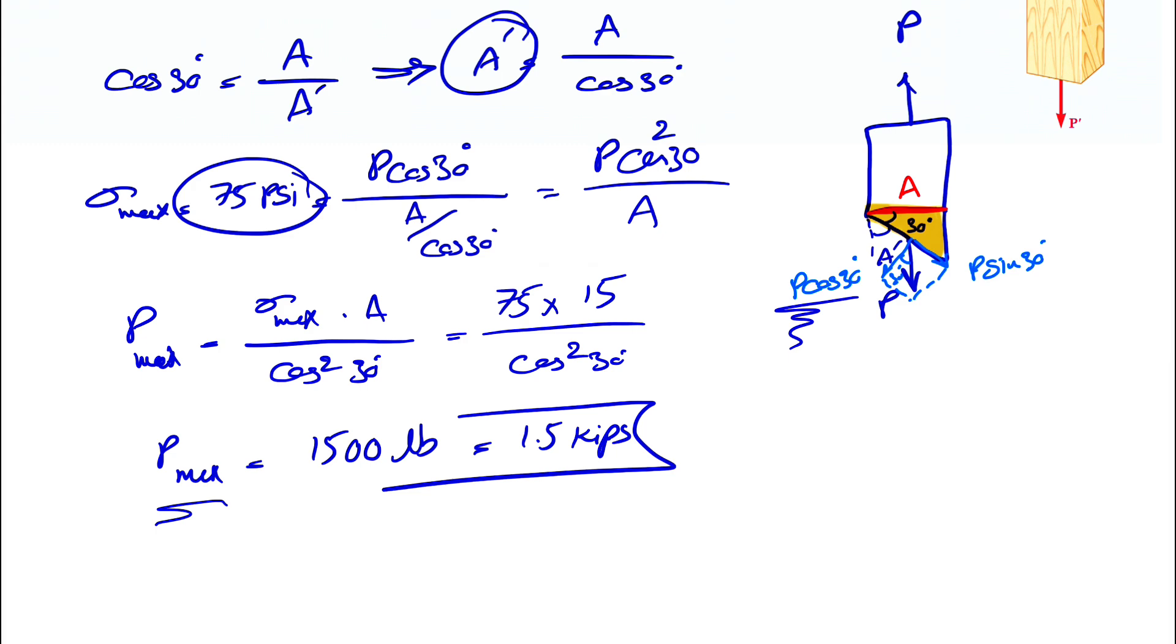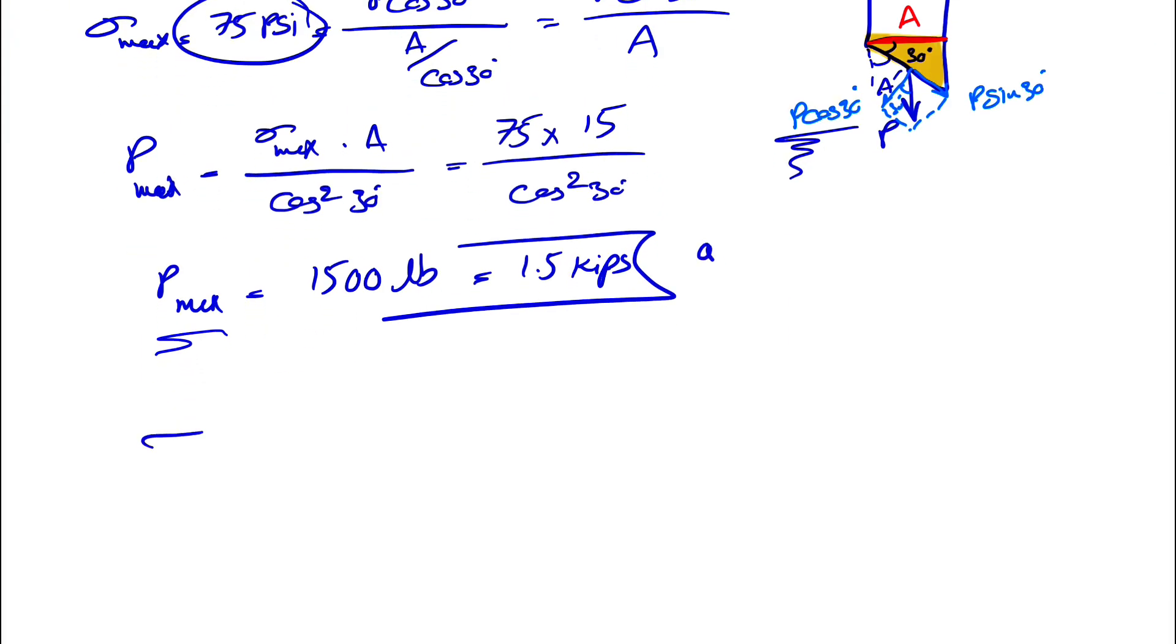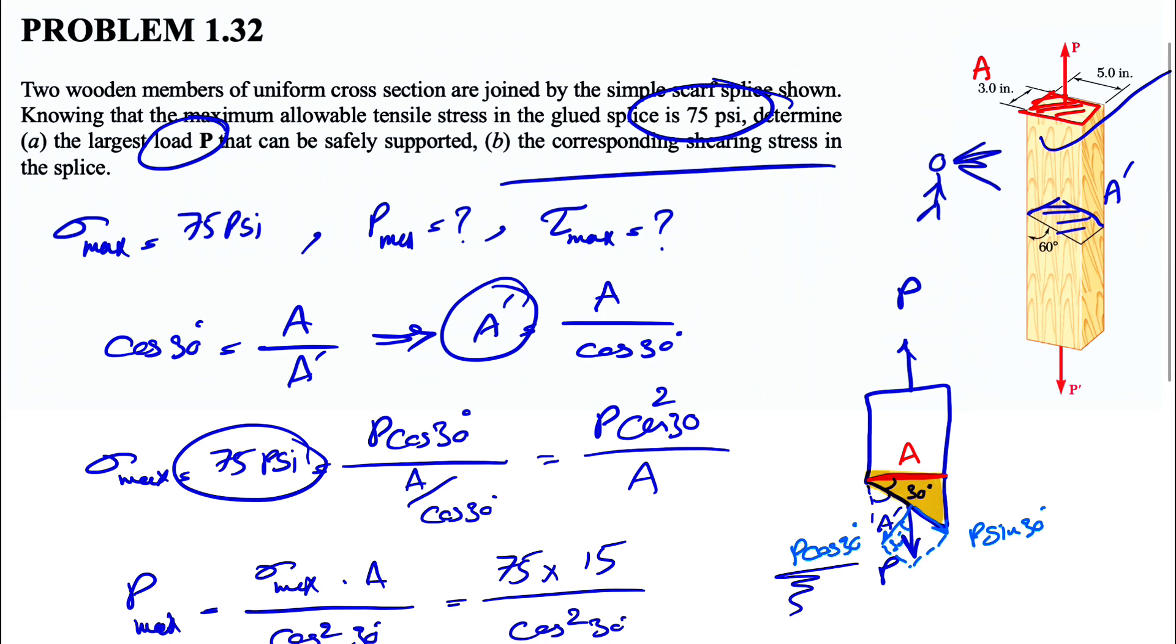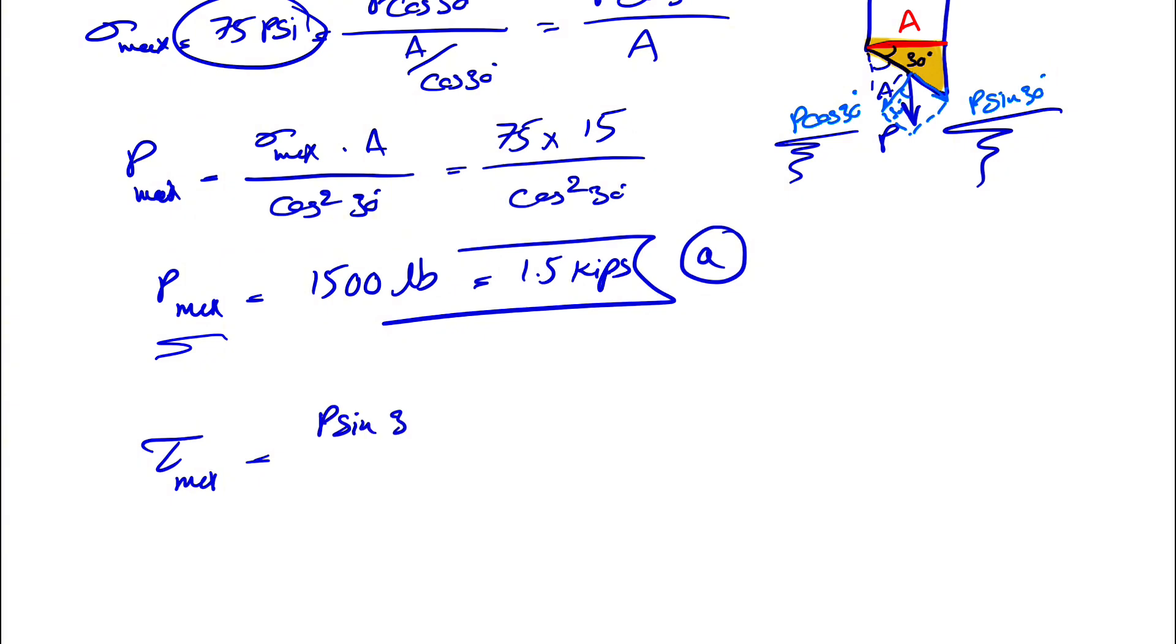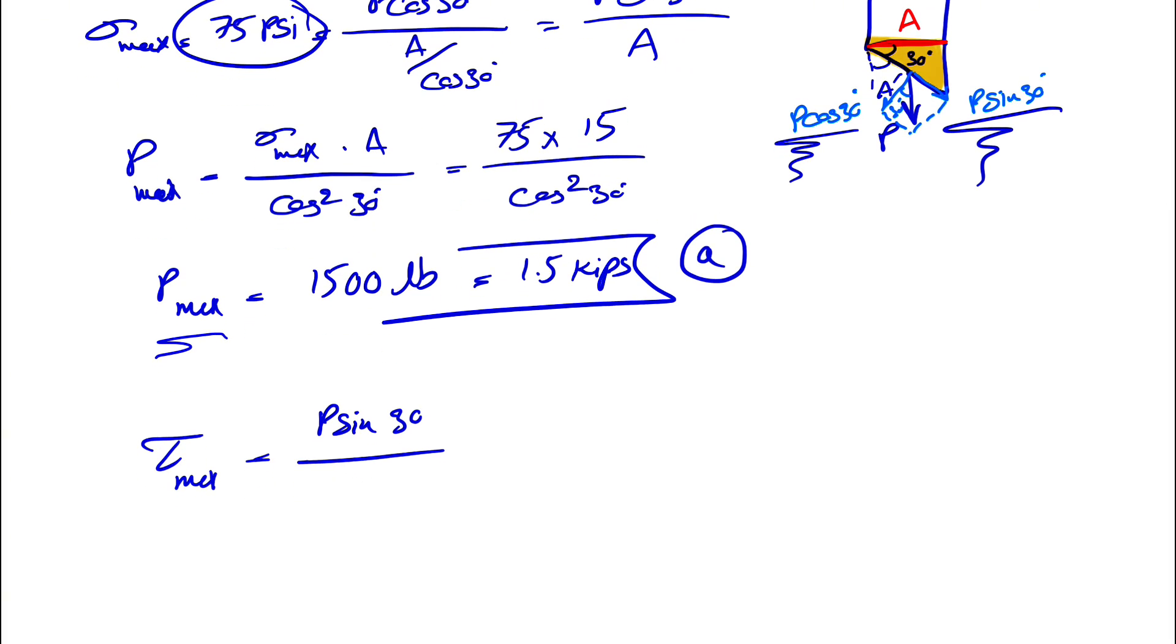So now that we have the force P, we can find the maximum shearing stress, which is what the question is asking in part B of the question. The corresponding shear stress in the splice. For shearing stress, this time we have the parallel force to the surface, which is going to make the shearing stress. So P sine of 30 degrees over same area, the area of the glued surface or A prime, which was A over cosine of 30 degrees. So basically this time we have P sine of 30 degrees times cosine of 30 degrees over A, which we found in the previous part, 15 inches squared.